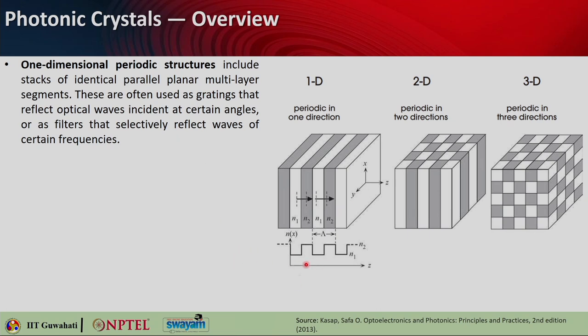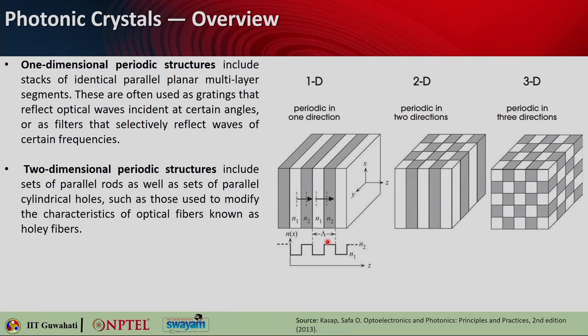Along the z direction — which is the grating vector or the direction along which the periodicity lies — if you take that direction z and plot the refractive index profile, you will see you are basically getting low, high, low, high and so on. This is one period, and you are repeating this structure over many periods, giving you the 1D periodic grating, or you can say 1D photonic crystal.